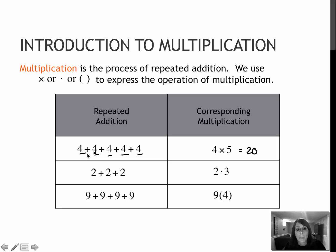Four times five is 20, because if I added four plus four, that's eight, plus four is 12, plus four is 16, plus four is 20. So notice these values have the same result.